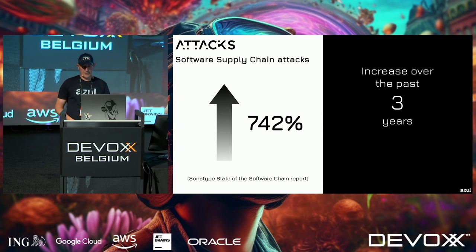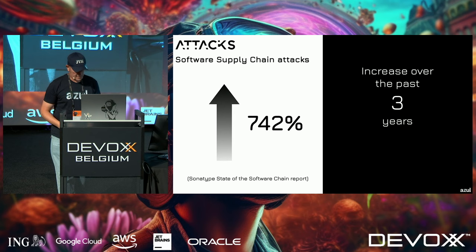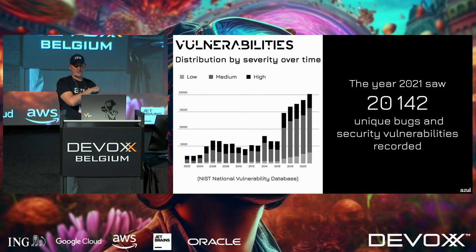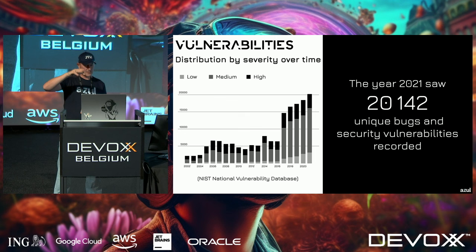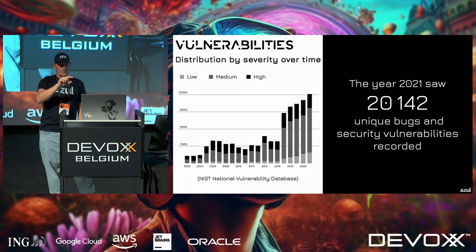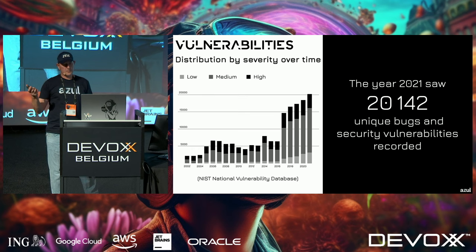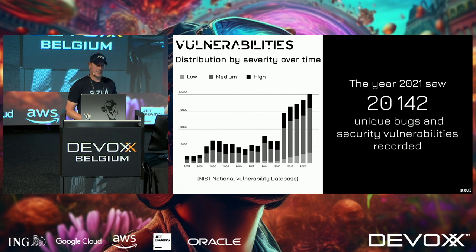According to Sonatype's State of the Software Supply Chain report, supply chain attacks increased by 742% over three years. NIST's NVD data shows vulnerabilities spiked in 2017 and kept rising — in 2021 alone, 20,142 unique bugs and security vulnerabilities were recorded in the NVD.